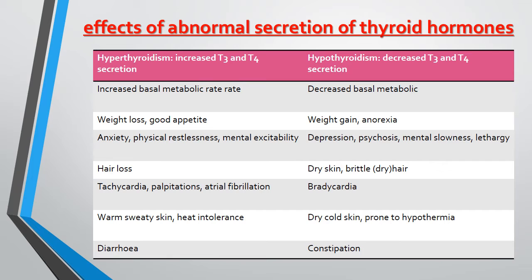In hyperthyroidism, increased T3 and T4 secretion causes tachycardia, palpitation, and atrial fibrillation. While in hypothyroidism, there will be bradycardia.